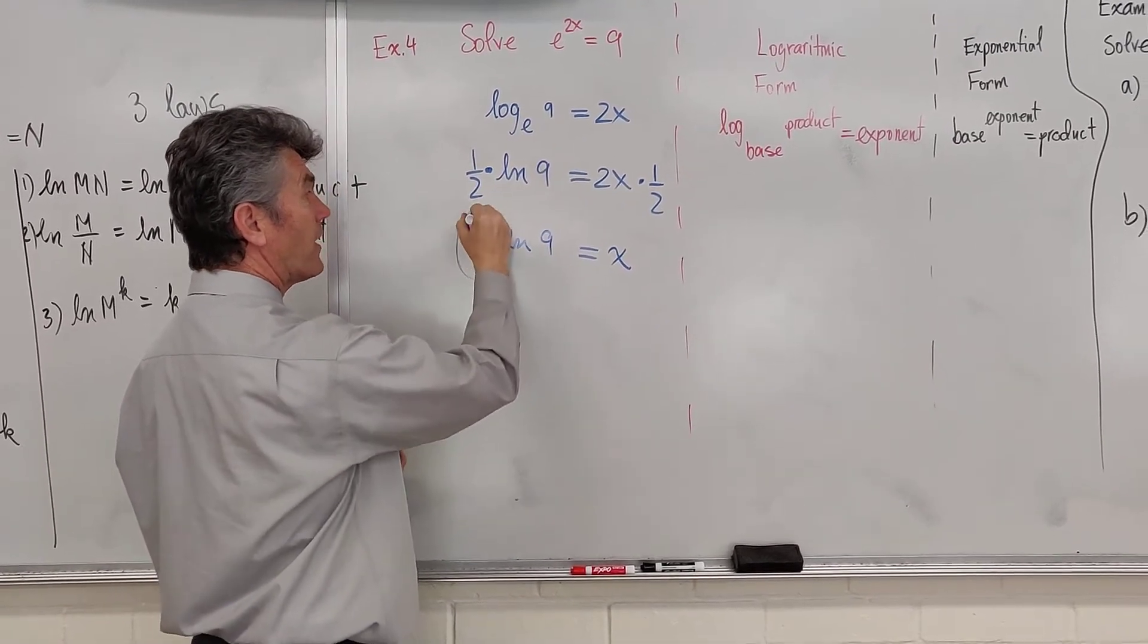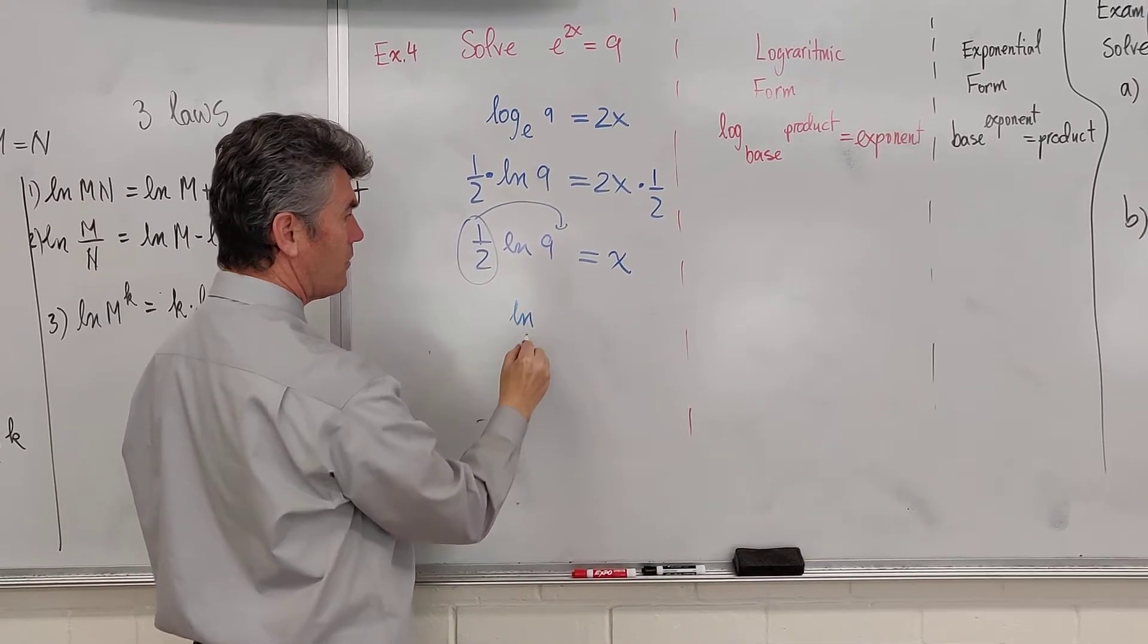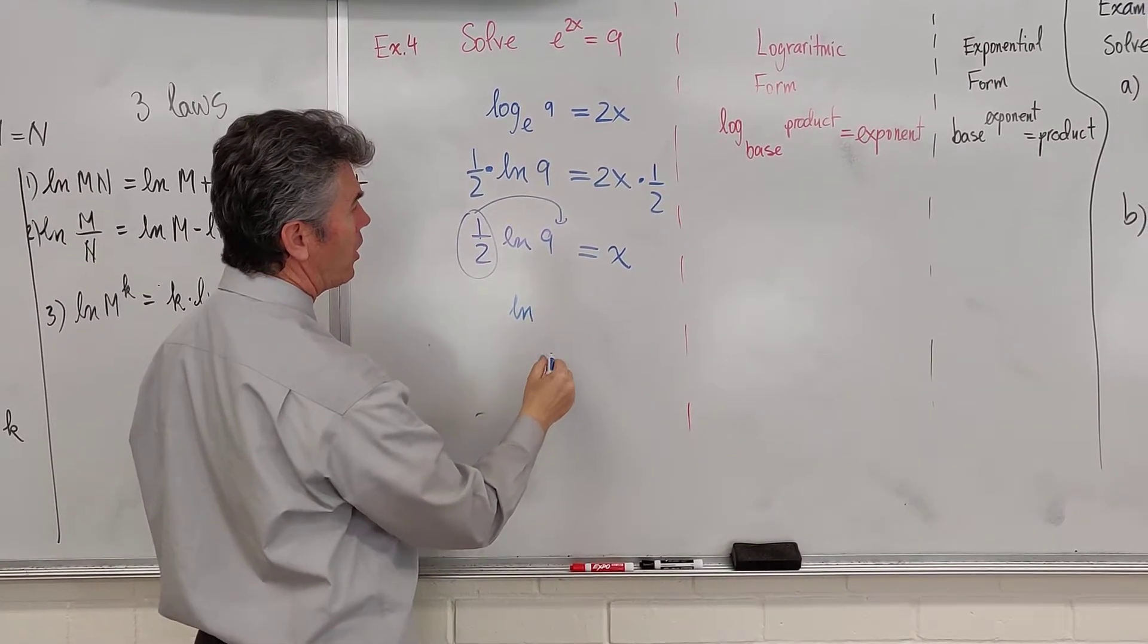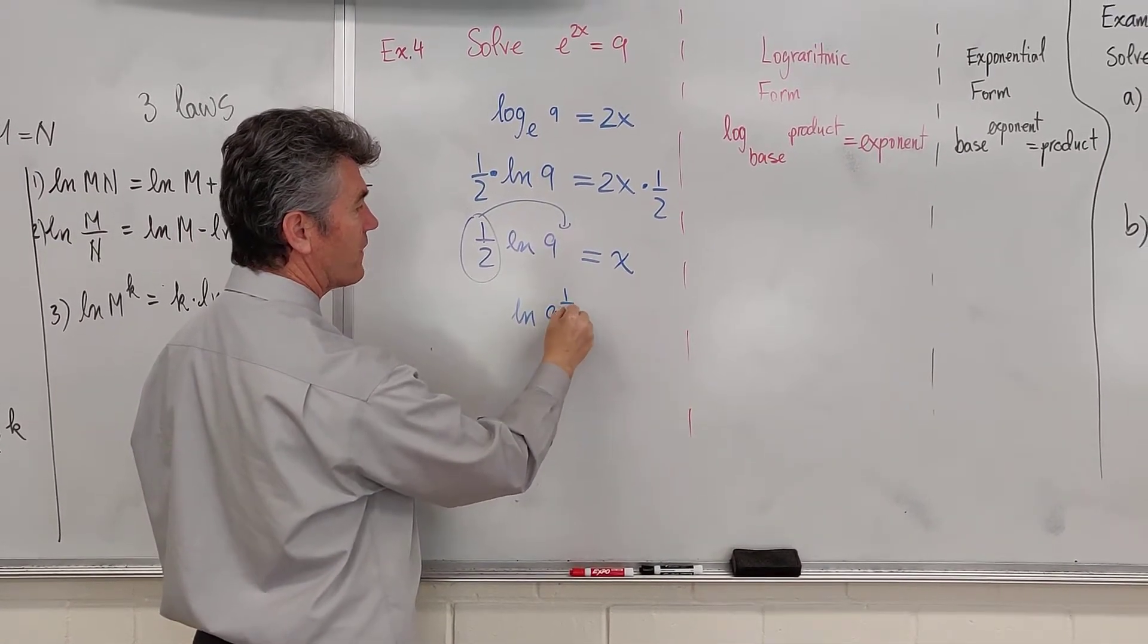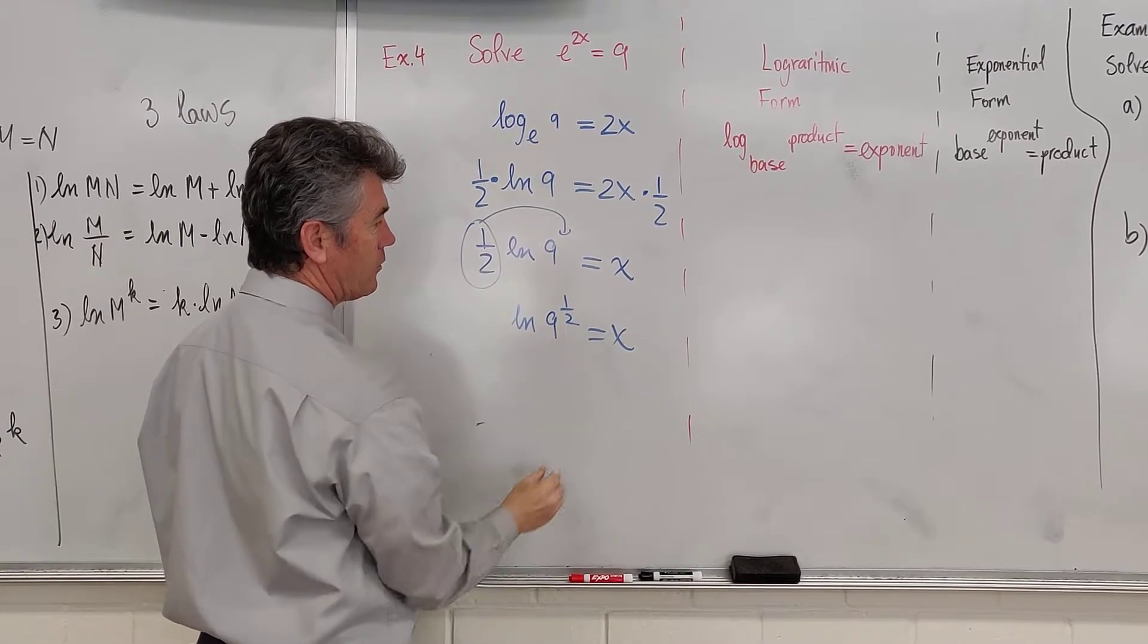I'm going to take the 1 half and bring it up. I'm using the power rule. This is natural log of 9 to the 1 half is equal to x.